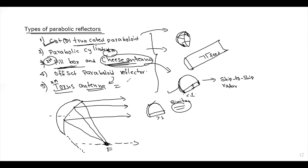The Torus antenna is similar to the cut paraboloid. Its use is to transmit or receive a number of beams simultaneously to a geostationary satellite orbit. These are the types of parabolic reflectors.